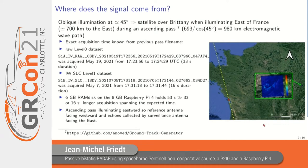To know with sub-minute accuracy when to start the acquisition, we use the Sentinel-1 level 0 dataset naming convention from the Copernicus website. The filename shows: Sentinel-1, interferometric-wide, raw or single-look complex, and the UTC date and time — for example, 2021 May 19th, 17:23:56 to 17:24:29. The illumination lasts about 33 seconds, which is well within our 55-second recording window. Even if we miss by a couple of seconds at the start or end, we will still capture the useful data.